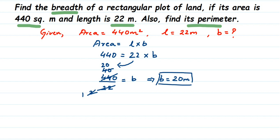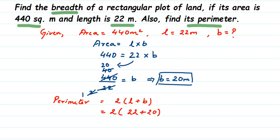Now using the breadth, we find the perimeter. The perimeter of a rectangle formula is: perimeter = 2 × (length + breadth). Substituting: 2 × (22 + 20) = 2 × 42 = 84. The unit is meter — perimeter is a single dimension, so it's not meter square. Perimeter = 84 meter.